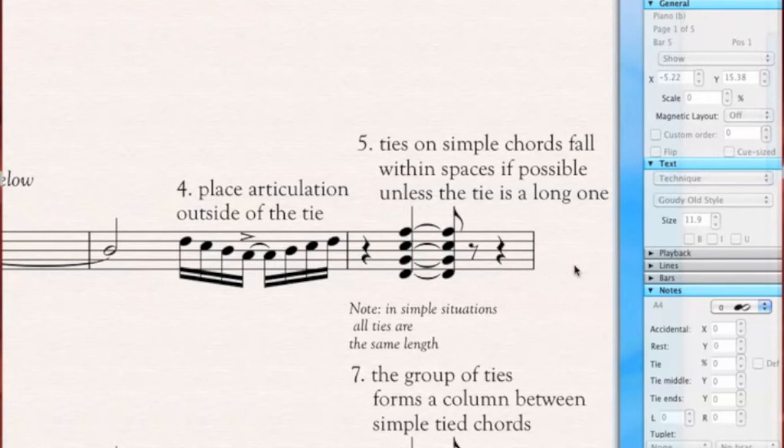Now ties on simple chords fall within spaces if possible, unless the tie is a long one. So here you see all the ties, two up and two down, they all fall within a space, because this is a simple chord. In simple situations, all ties are the same length.